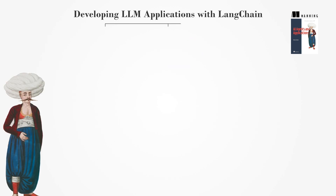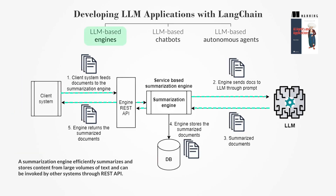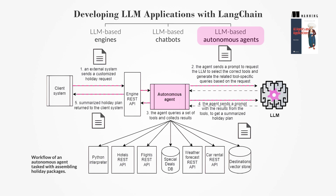LLM applications can be categorized into three broad groups: LLM-based engines, chatbots, and autonomous agents. LLM-based engines are back-end systems that handle specific requests, such as summarizing texts or answering questions based on a knowledge base. LLM-based chatbots are interactive systems that engage users in conversation, providing responses based on the context of the interaction. LLM-based autonomous agents are more complex systems that handle tasks involving multiple data sources and decision-making processes.